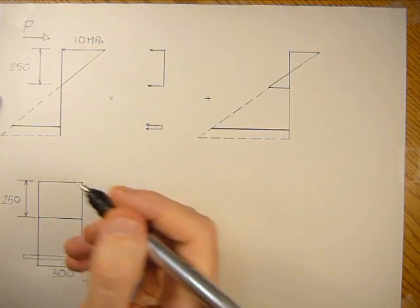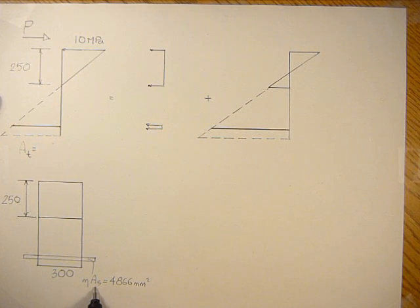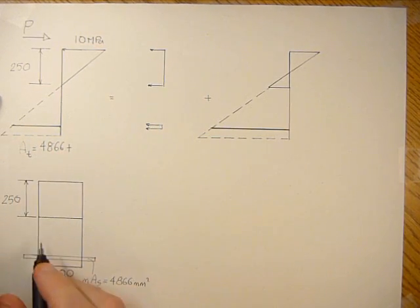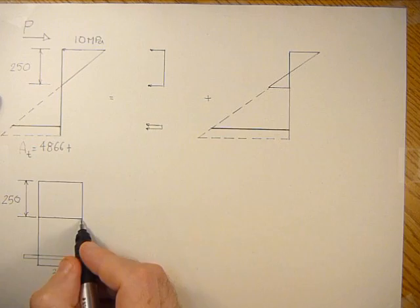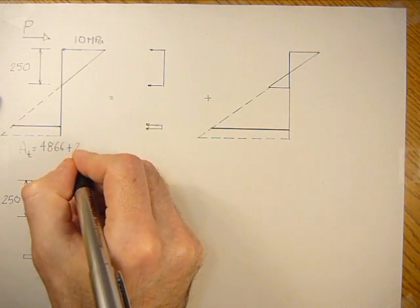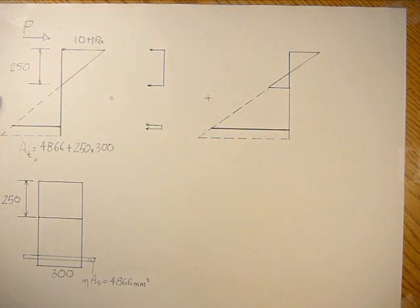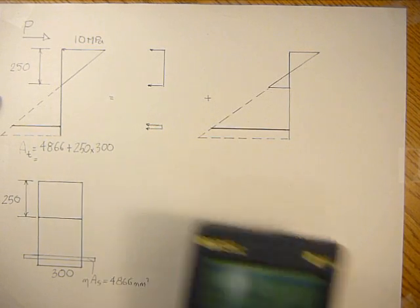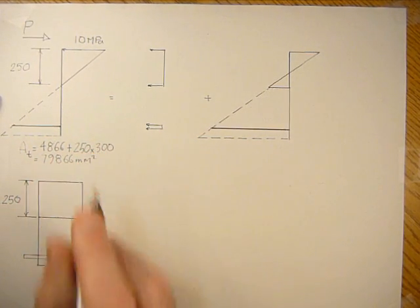Okay, so first of all, we need to find out what the transformed area is of this new section, and that's going to be the transformed area of the N-area steel, 4866, plus what's ever available, which is, this is all cracked here, so all that's available is this rectangular section above the neutral axis in here. That's 250 times 300. And when we work that out, it will come out to be 4866 plus 250 times 300, which is 79,866 millimeters squared.